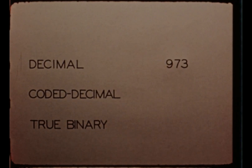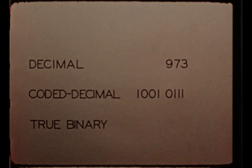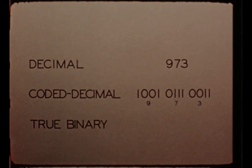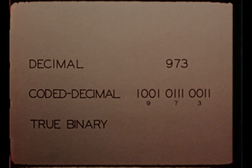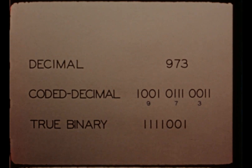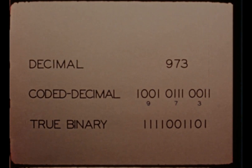Because the machine operates only on numbers in true binary form, the coded decimal tetrads must be converted before any computation takes place. This conversion is a simple operation included as part of every problem. When the problem is solved, answers are converted from true binary back to coded decimal form. These conversions are not apparent to a casual user of the machine.